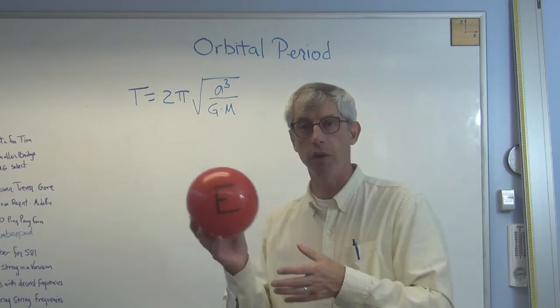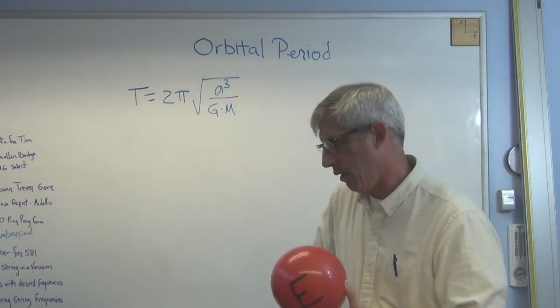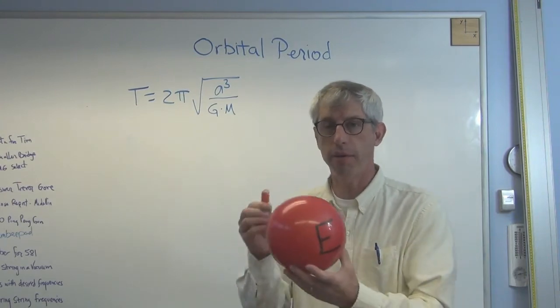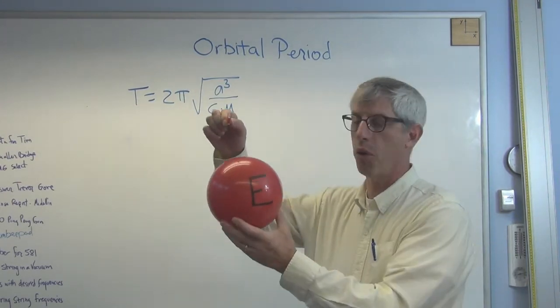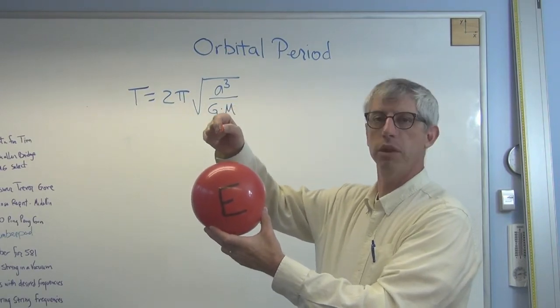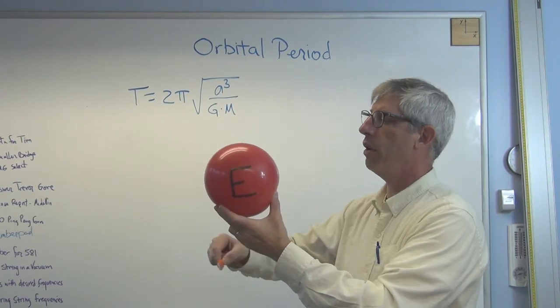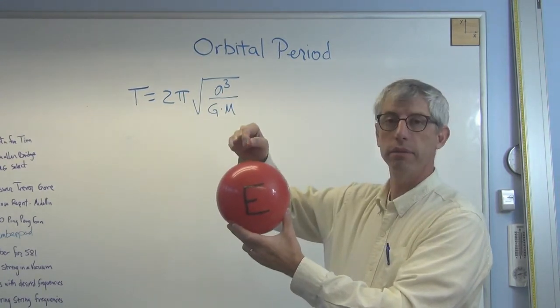So if I have my Earth here, some of you have seen this before, and I need a spaceship. I've got a thumb drive, I'm going to have a thumb drive orbit my Earth. If the orbit is going this direction, to start there, the time it takes to go around and back, that's the period.